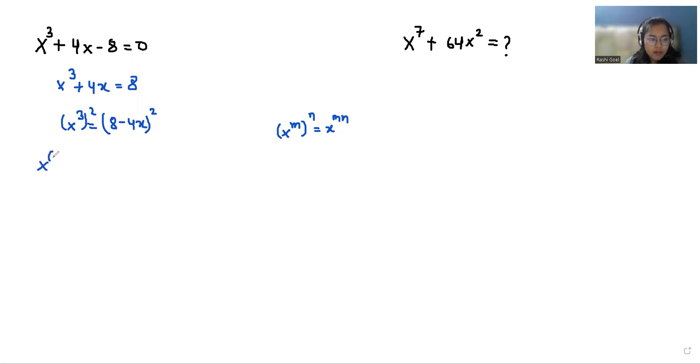So here we can write this as x⁶, and we can use the famous identity (a - b)² = a² - 2ab + b². So we can write it as 8² - 2(8)(4x) + (4x)².